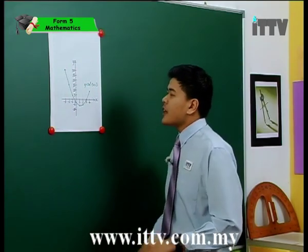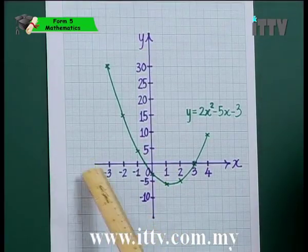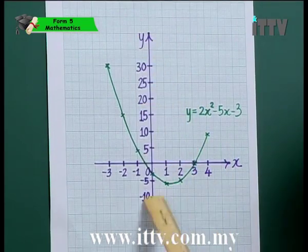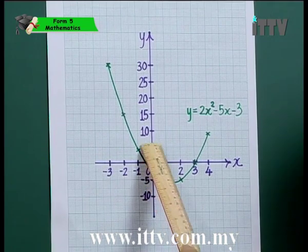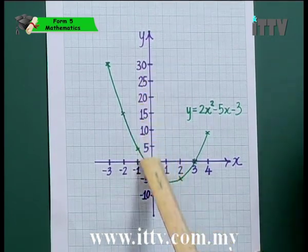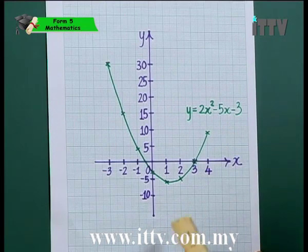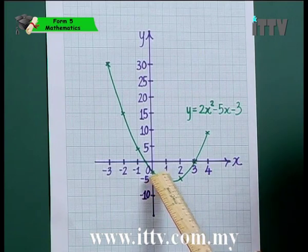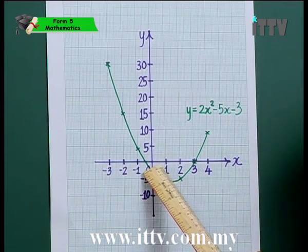A few points to note: firstly, the scales. For the y-axis, the scale was 2 cm to 5 units — make sure it is 2 cm to 5 units, as using the right scales will be awarded marks. For the x-axis, 2 cm represents 1 unit. Please follow the scale.